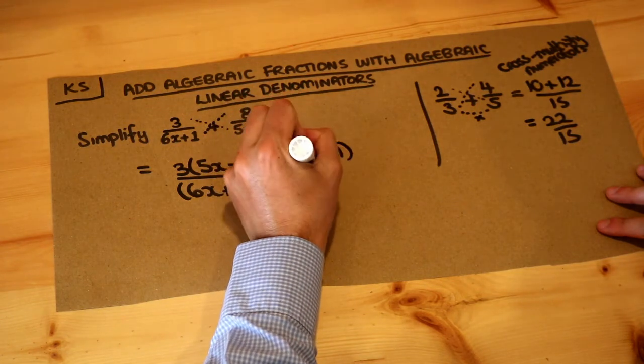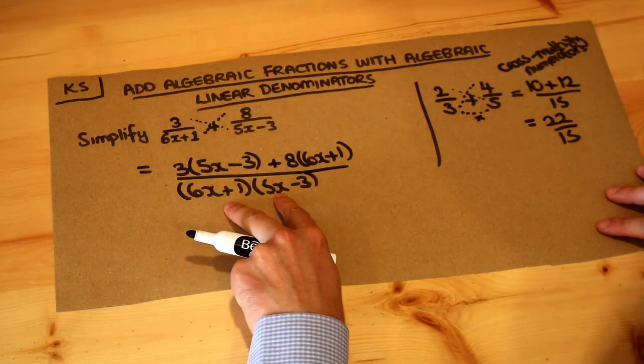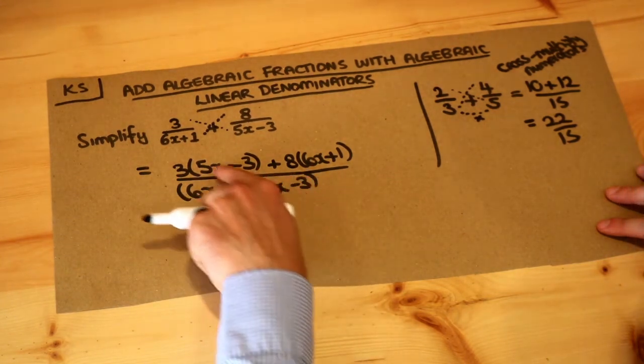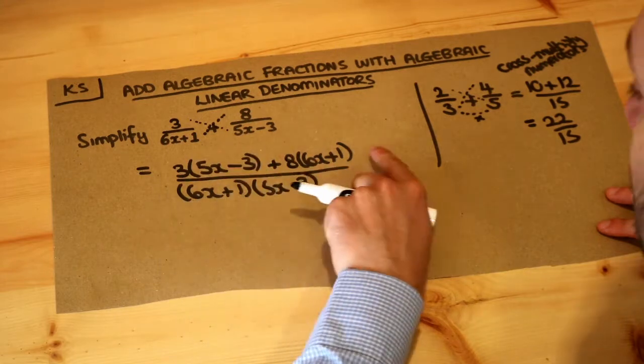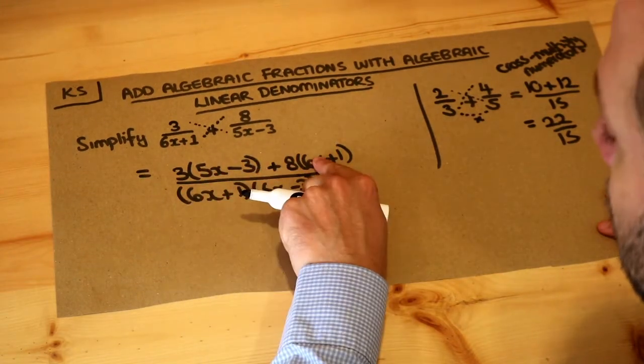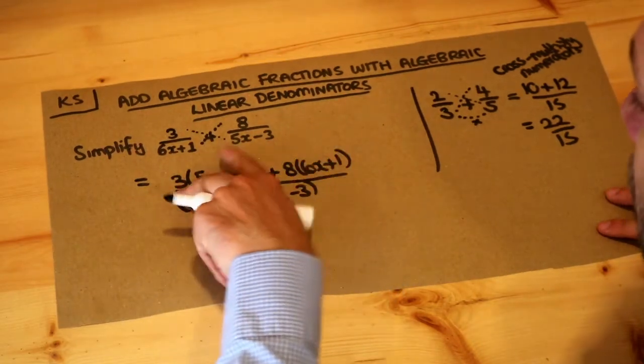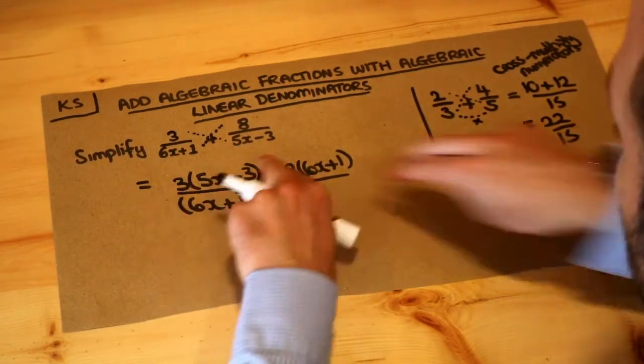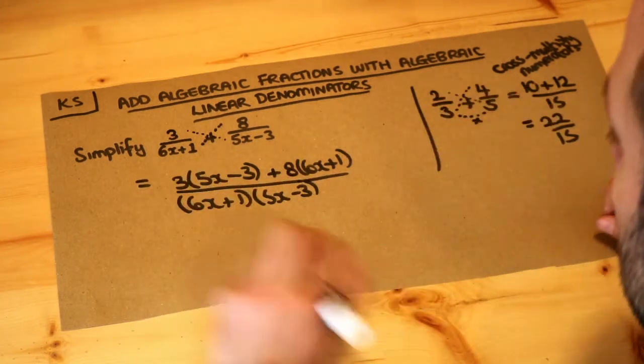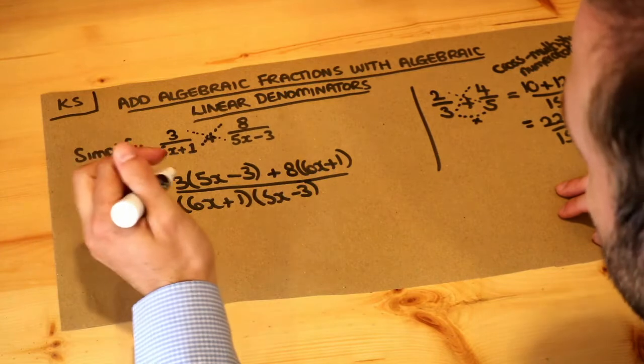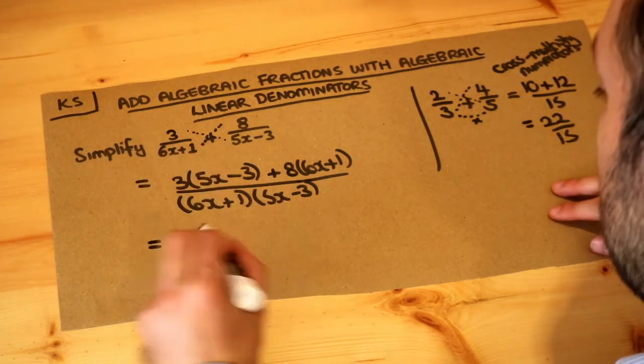Now although we don't need to multiply out the denominators because it's factorized, it's something times something, we should multiply out the numerators because it's not factorized. This is an addition of two things, that's not a factorization, even though these individual parts of it might be factorized. The overall expression is not, because there's a plus in the middle, not a times. And by expanding this out, we can subsequently simplify by collecting like terms.